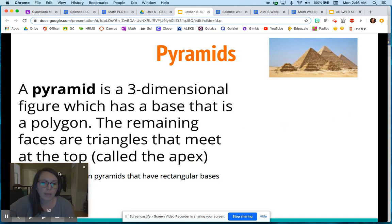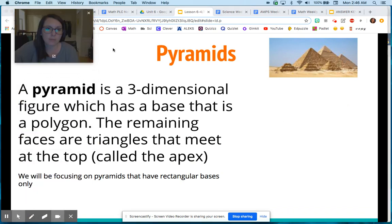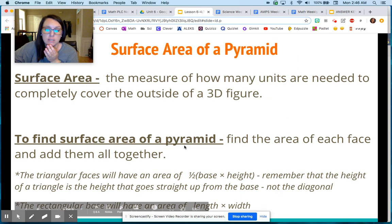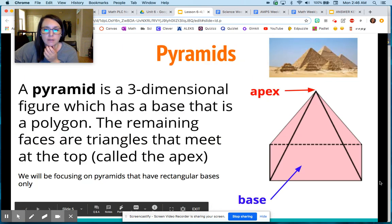A pyramid is a 3D figure which has a base that is a polygon. We are only going to be talking about rectangular pyramids, so all of the bases are going to be a rectangle. This is a picture of what they look like. The base is the bottom, not pointing to this front side, it's pointing to the bottom.